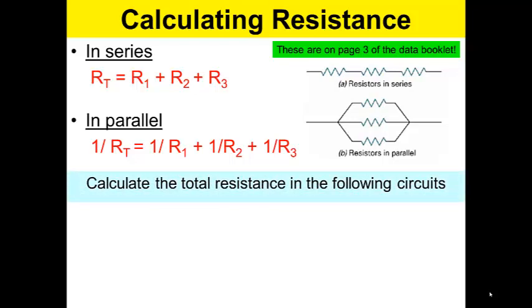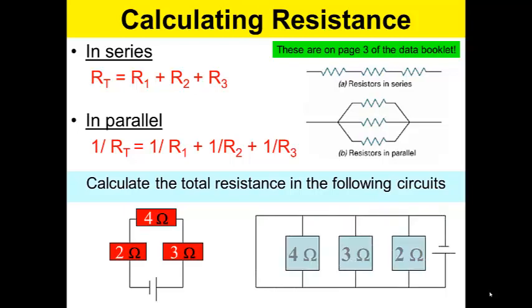Calculate the total resistance in the following circuits. So you have 1 in parallel, so you would be 2 plus 4 is 6, plus 3 is 9, and then 1 over 4, 1 over 3, 1 over 2.